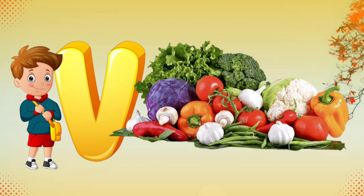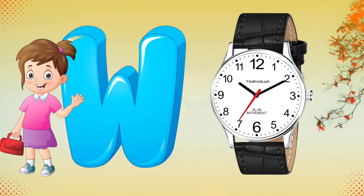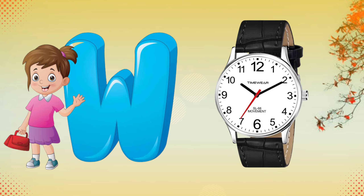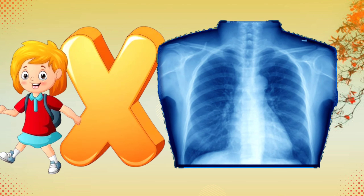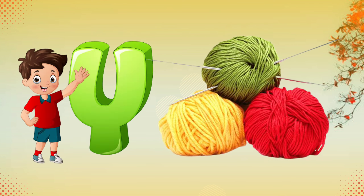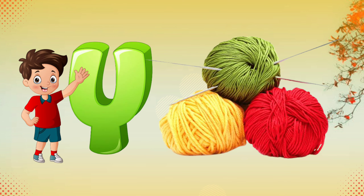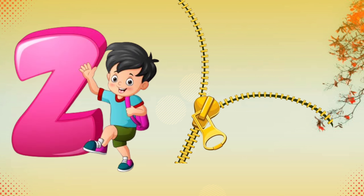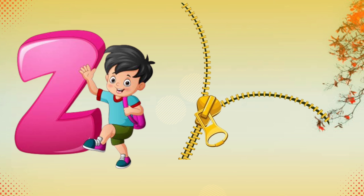V for vegetable, W for watch, X for x-ray, Y for yarn, Z for jeep.